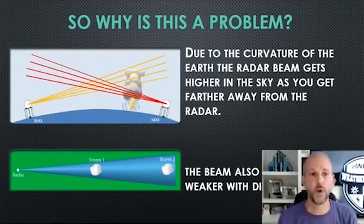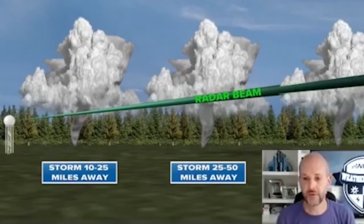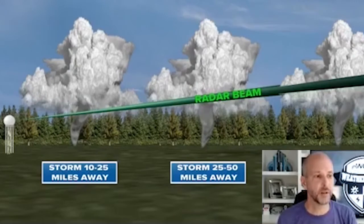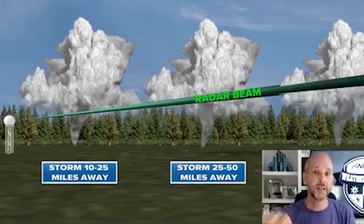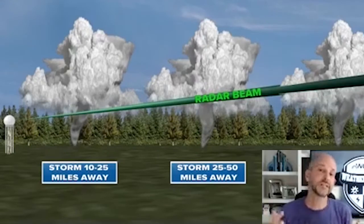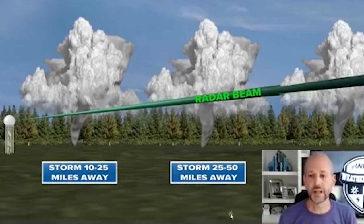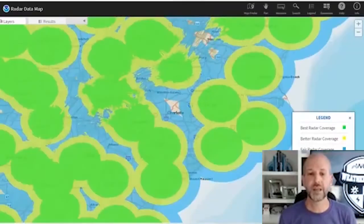The beam is also looking higher and higher in the sky the farther out it goes. Imagine a storm 10 to 50 miles from the radar — the radar beam can detect a tornado in the lowest levels. But farther away, the beam is now looking 8,000 to 10,000 feet above our heads and might miss what's below it. Radar is not uniformly covering the earth. I like to tell people it's like a cell phone tower — close to it, you get five bars; really far away, you get one bar and dropped calls. As a meteorologist, we take into account where the radar is and how close the storms are.